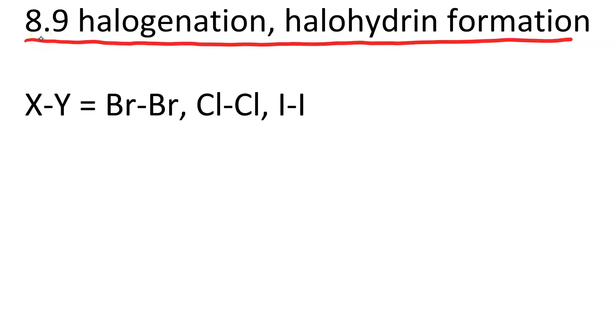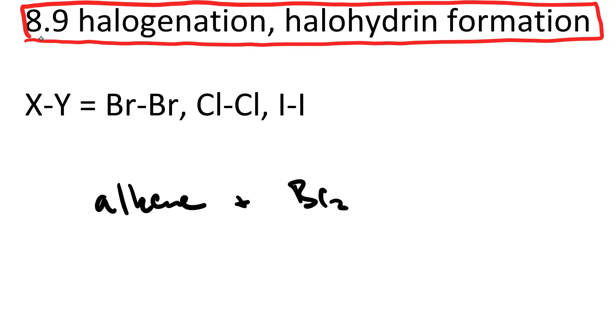Halogenation and Halohydrin Formation. Here we take an alkene plus a halogen, like Br2, and we get a dibromoalkane.